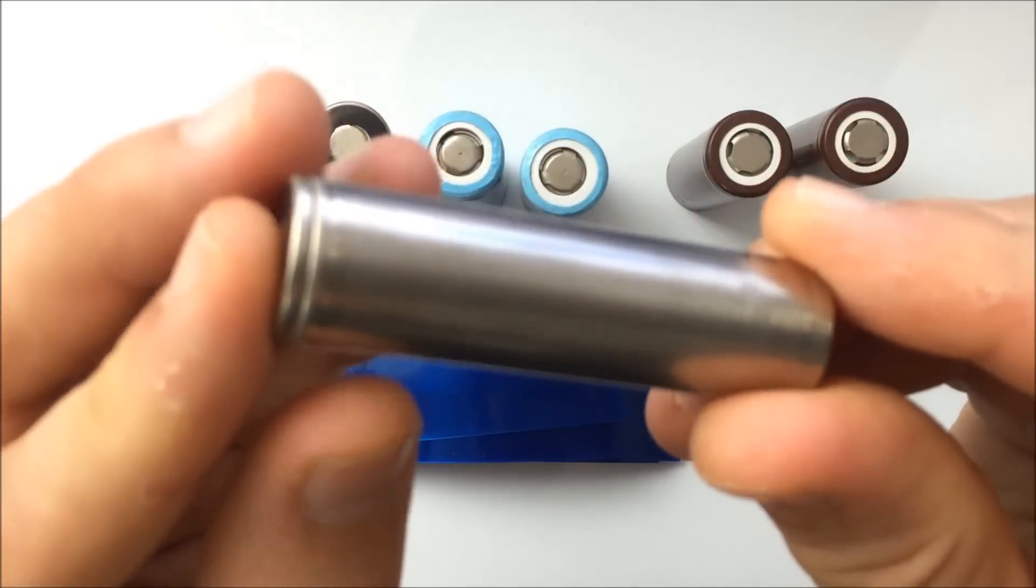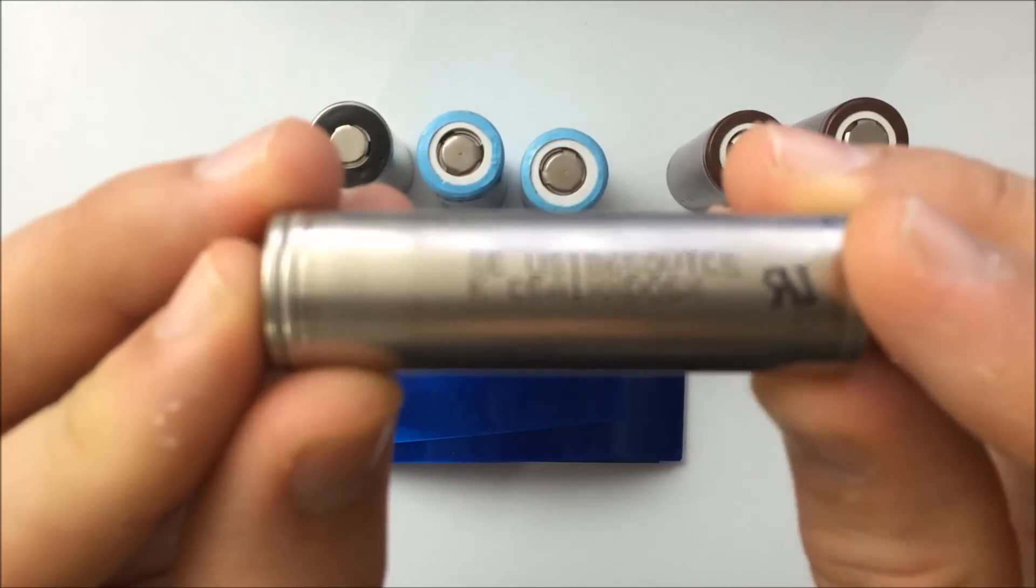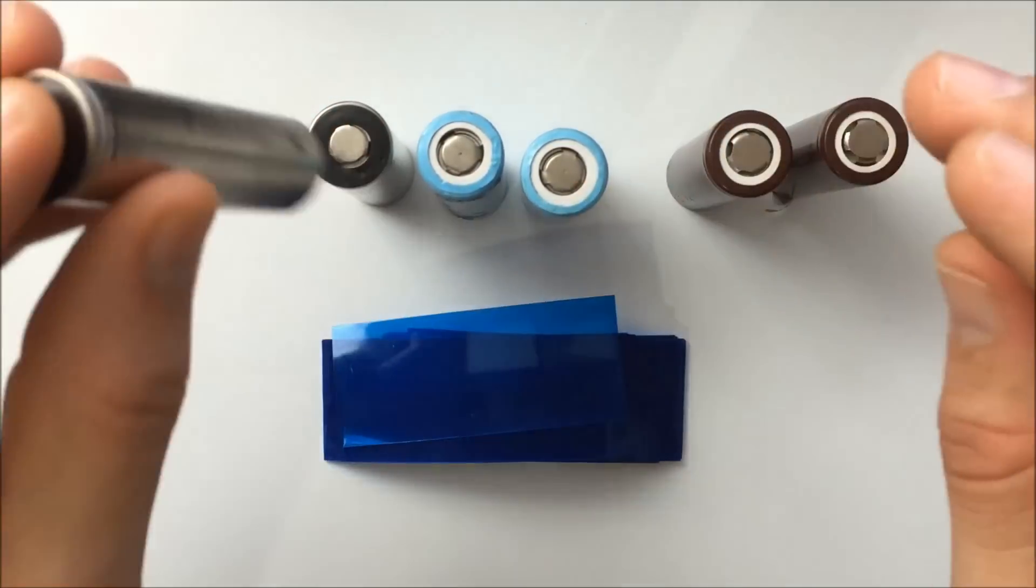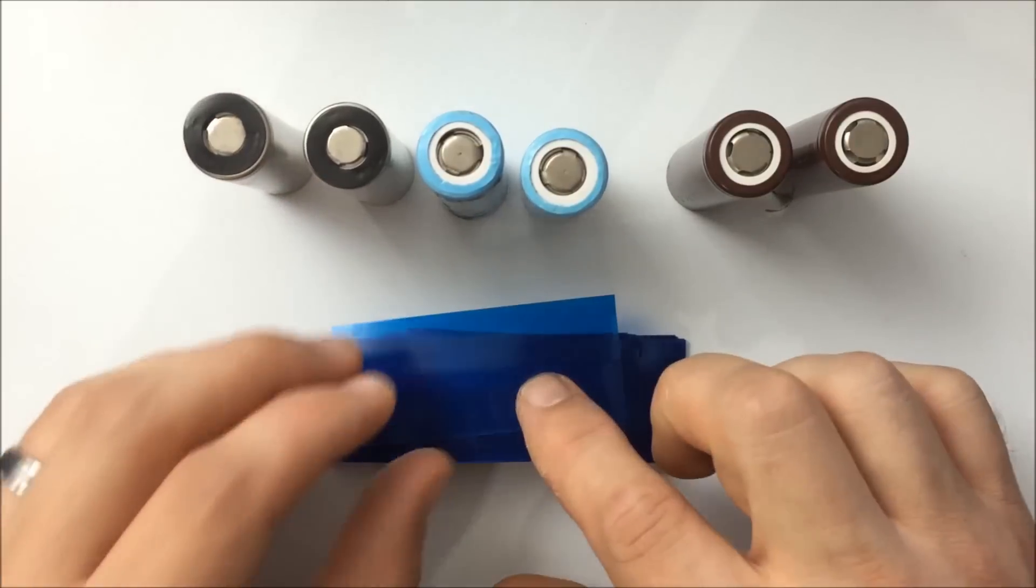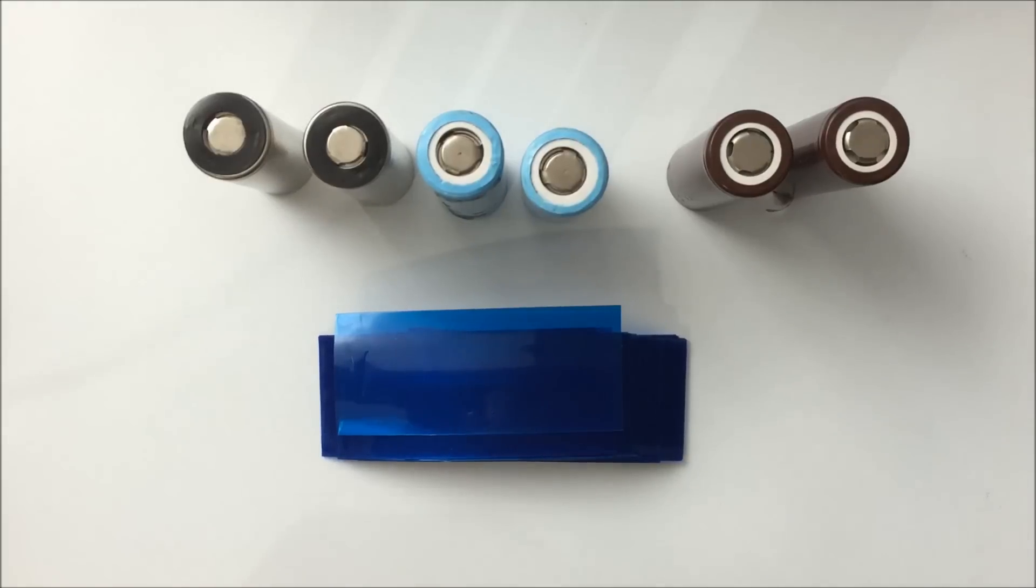Now, you could also use nail polish on your old sleeve to sort of cover up any exposed areas until you can get something like this in, but you definitely want to be careful. Check all your batteries regularly for safety reasons. You don't want this to short and then to vent. That would not be good. So this is why I'm making this.